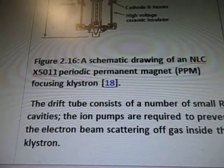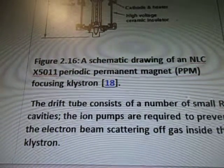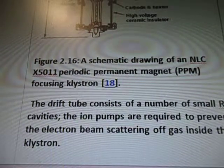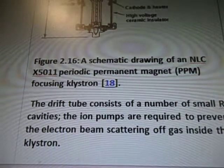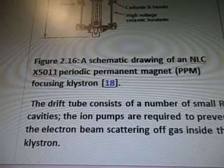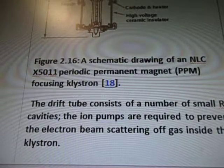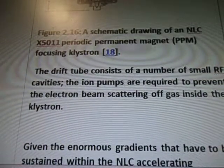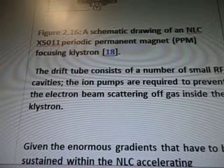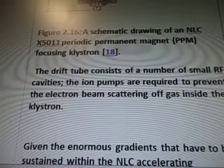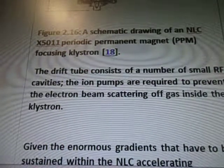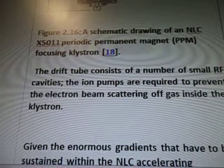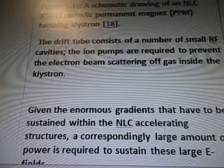This is a schematic drawing of an NLC X5011 periodic permanent magnet (PPM) focusing klystron. The drift tube consists of a number of small RF cavities. The ion pumps are required to prevent the electron beam scattering off gas inside the klystron.